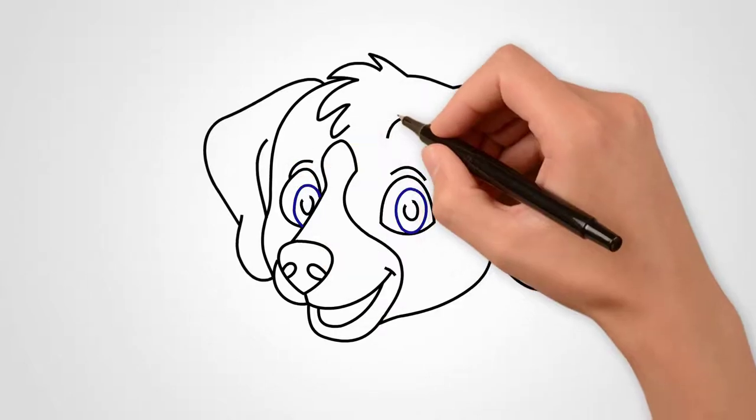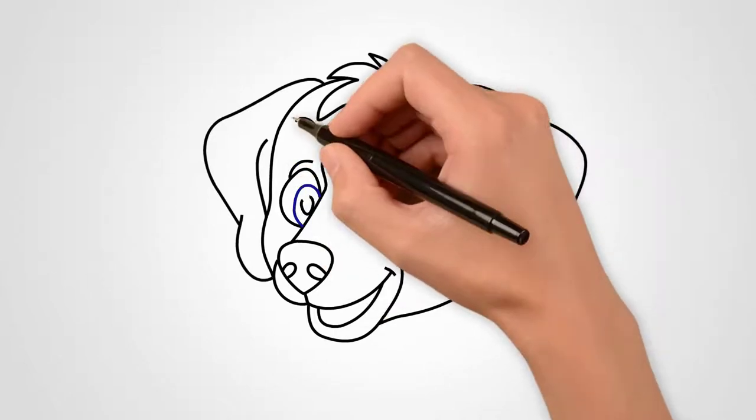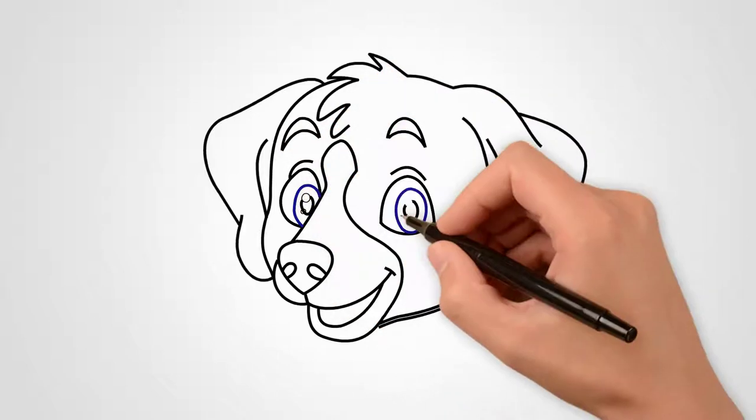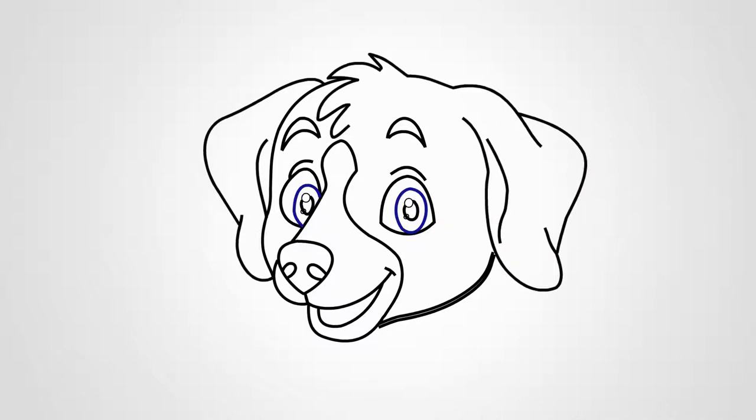See how to draw eyes. Draw an oval of the first eye. In the middle we draw the pupil of the eye. Next, draw an oval of the second eye. Here we also draw the pupil of the eye.